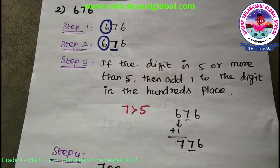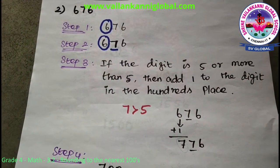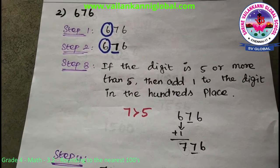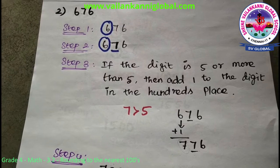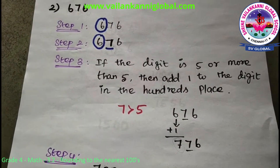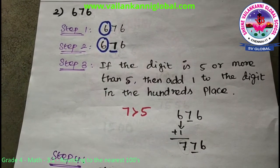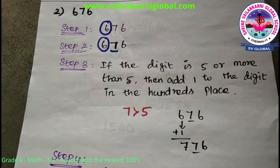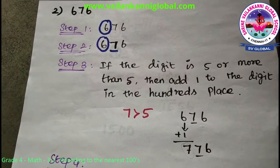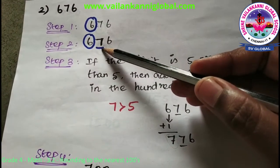Look at the second question: 676. Step 1 — we have to circle the hundreds place, because we are discussing rounding to the nearest 100. Step 2 is to locate the number to the right of the hundreds place and underline it. Here 7 is to the right of the hundreds place, so underline that 7.